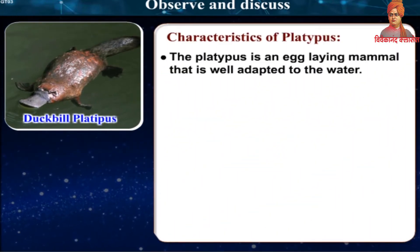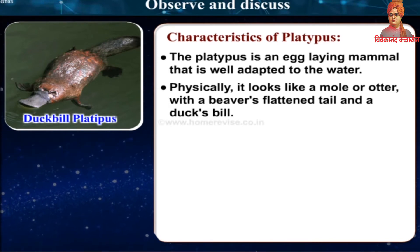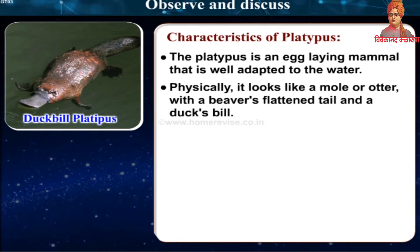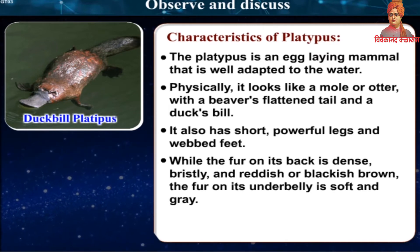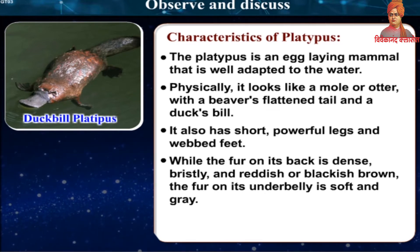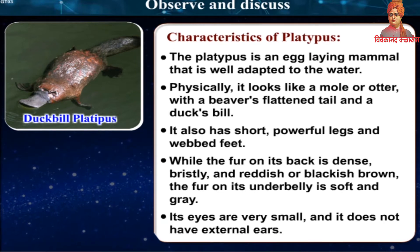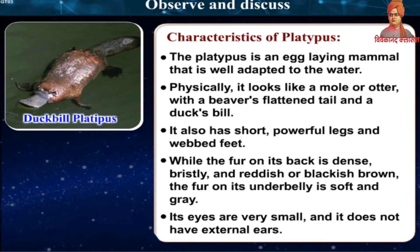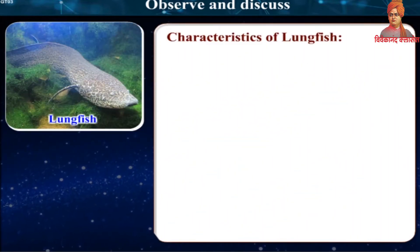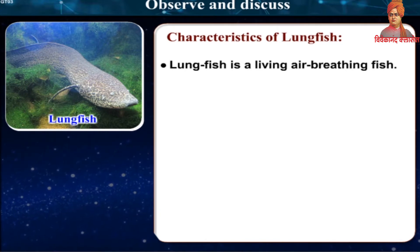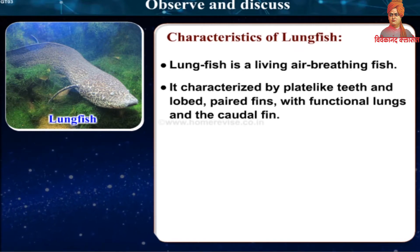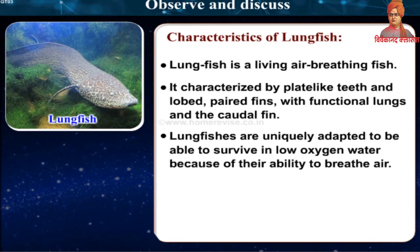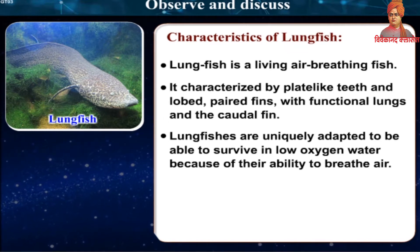Characteristics of the Platypus: The platypus is an egg-laying mammal well adapted to water. Physically it looks like a mole or otter with a beaver's flattened tail and a duck's bill. It has short, powerful legs and webbed feet. The fur on its back is dense, bristly and reddish or blackish-brown, while the fur on its underbelly is soft and grey. Its eyes are very small and it does not have external ears. Lungfish is a living, air-breathing fish characterized by plate-like teeth and lobed fins, with functional lungs. Lungfishes are uniquely adapted to survive in low oxygen water because of their ability to breathe air.